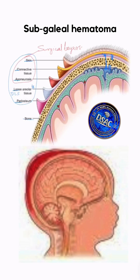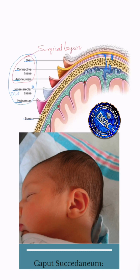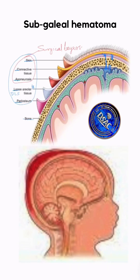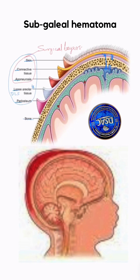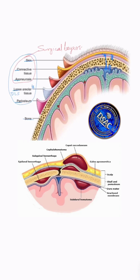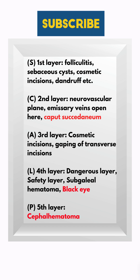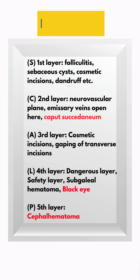In short: the hematoma deposited below the periosteum is called cephalohematoma. It will not cross the sutural ligament and spreads over a particular bone only. This swelling if pressed will be tense and painful. Unlike sub-galeal hematoma which is tense and fluctuating, or caput succedaneum which is very soft and crosses sutures. To summarize: blood in the second layer causes caput succedaneum; blood below the galea aponeurotica causes sub-galeal hemorrhage leading to black eye; and blood below the periosteum is called cephalohematoma.